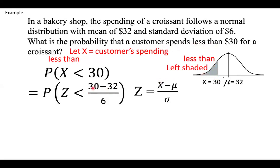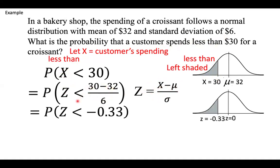Then we can convert the x into z using the standardization formula. So the mean is $32, and the standard deviation is $6, which is written in the question. So when you put this into the calculator, you should get negative 0.33.